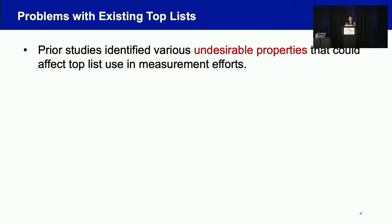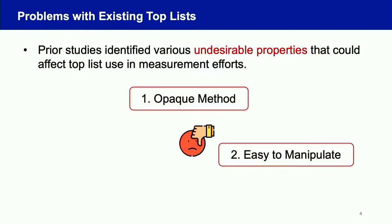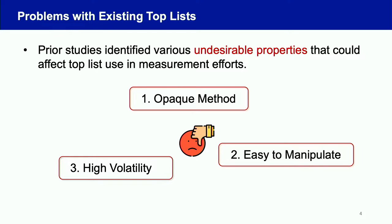Despite how important those lists are, they actually have several undesirable properties. First, their data source and ranking method remain opaque — we cannot really understand how those lists are constructed. Several prior studies have identified ways to manipulate those top lists, entering target domains for higher rankings. And those lists are also pretty unstable, especially Alexa.